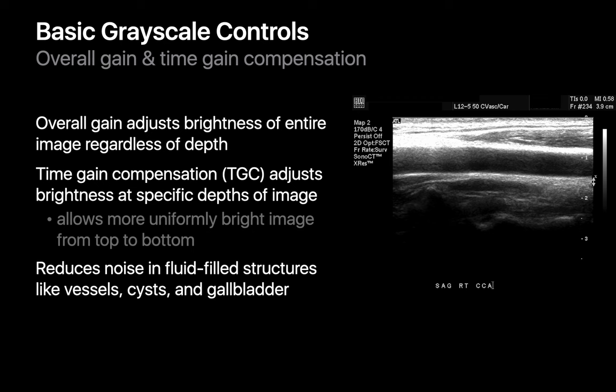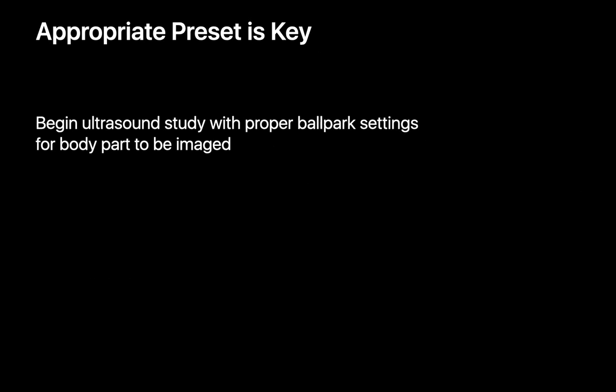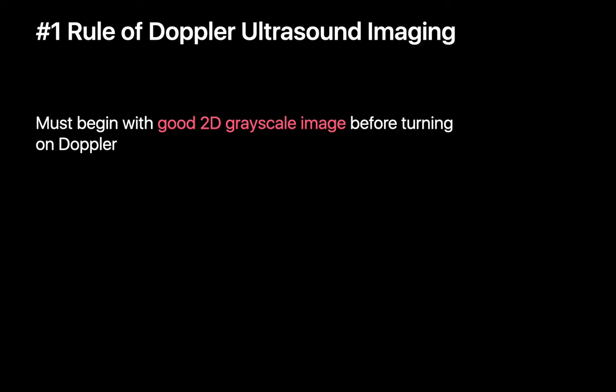Gain refers to the brightness of your 2D grayscale ultrasound image. The brightness of the entire image can be adjusted using the overall gain control, but brightness can also be adjusted at specific image depths using the time gain compensation controls, which looks like the graphic equalizer on a home stereo system. By tweaking overall gain or gain at specific depths, you'll reduce image noise and create an easier image to interpret. A reminder: good color Doppler imaging depends on a good 2D grayscale image, so take the time to optimize your 2D image before switching on Doppler.